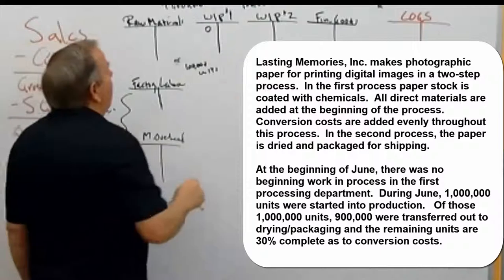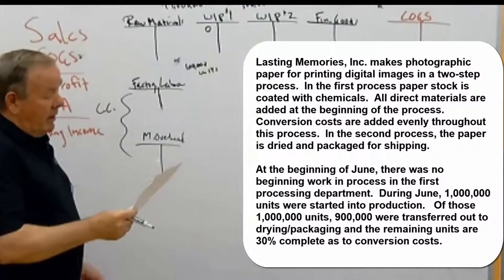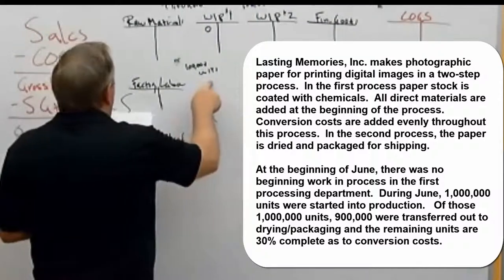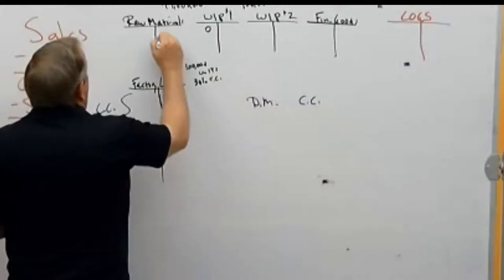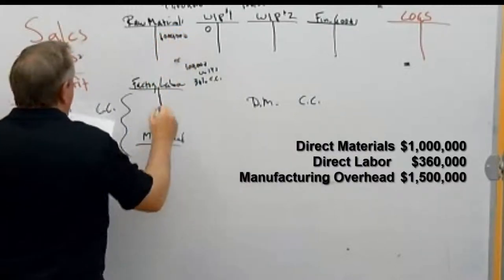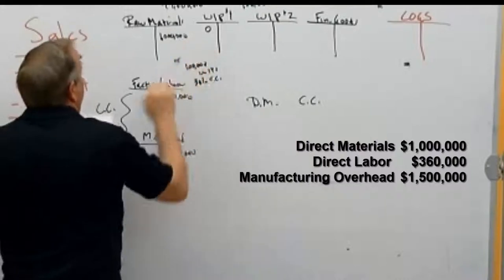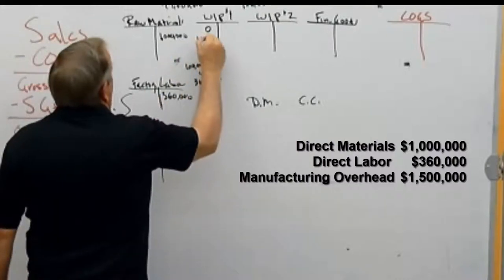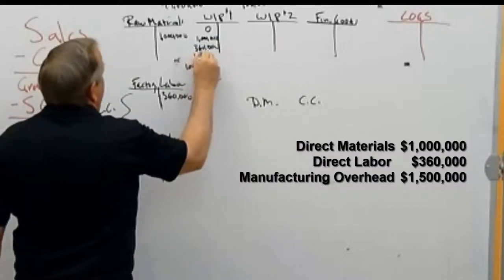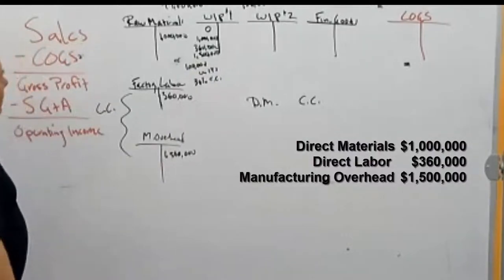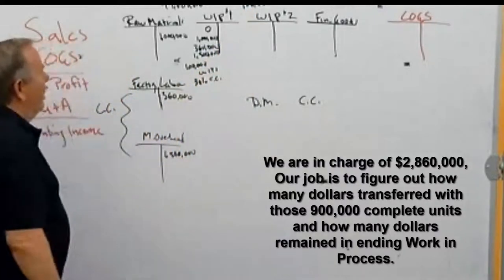We have to figure out how many dollars go with those 900,000 transferred units and how many dollars stay with the 100,000 remaining units. The remaining units are 30% complete for conversion costs. We brought in $1,000,000 of direct materials, $360,000 of direct labor, and $1,500,000 of manufacturing overhead was applied into process one.